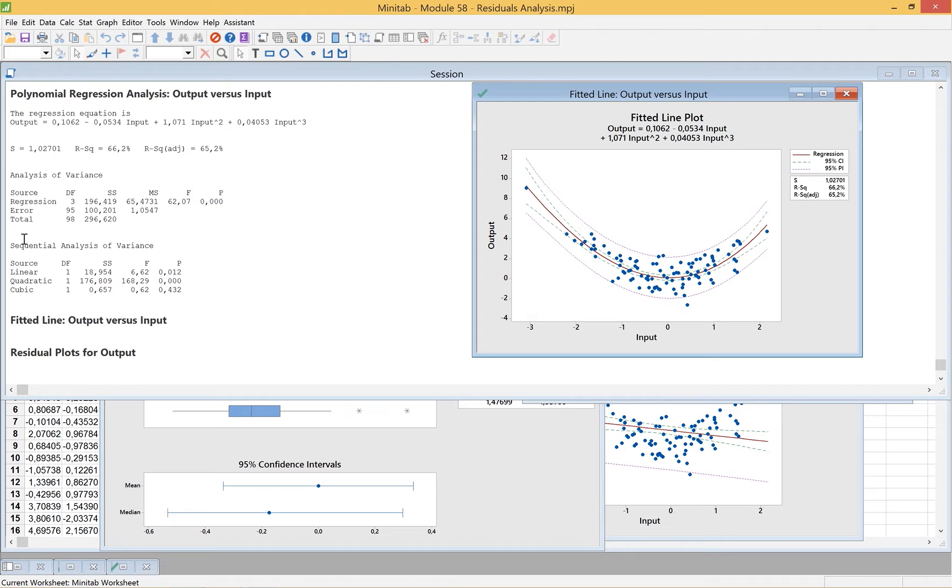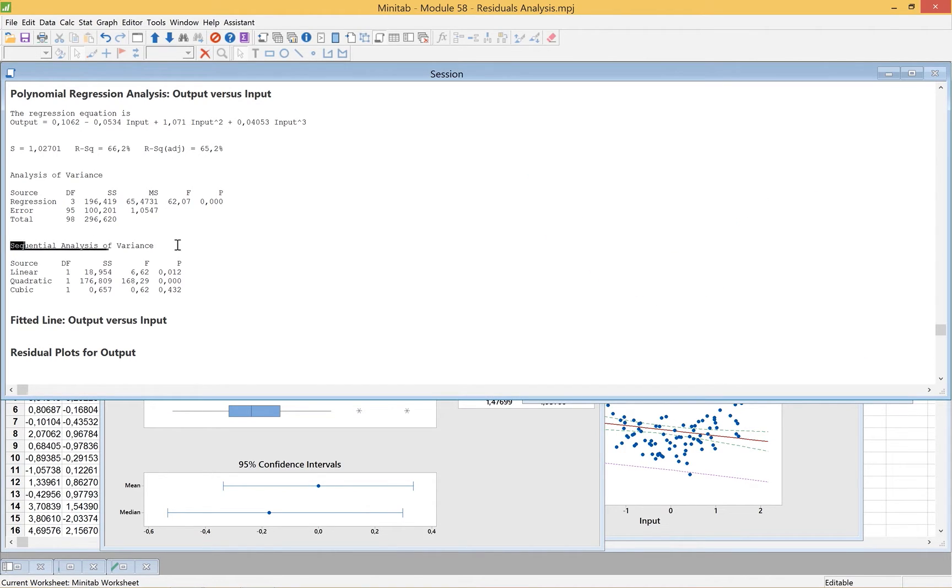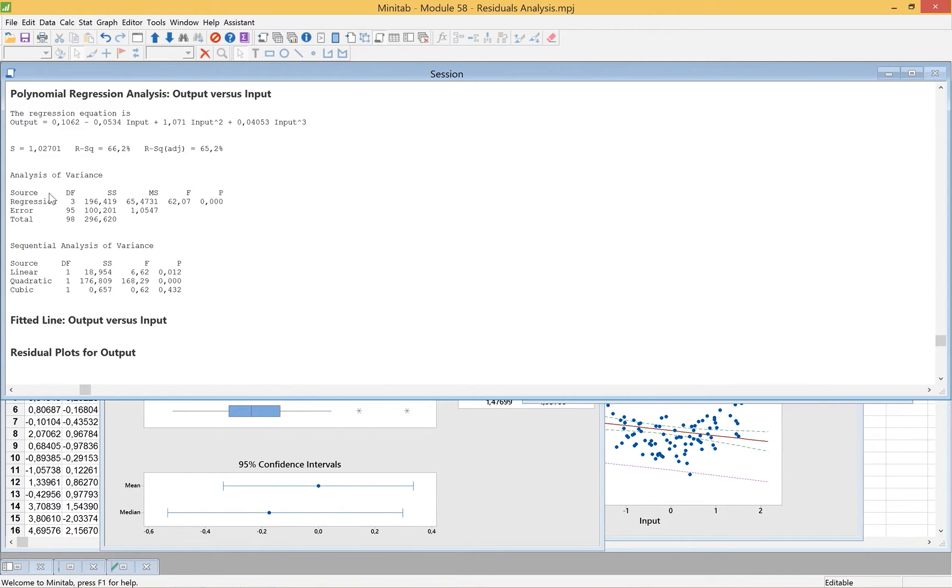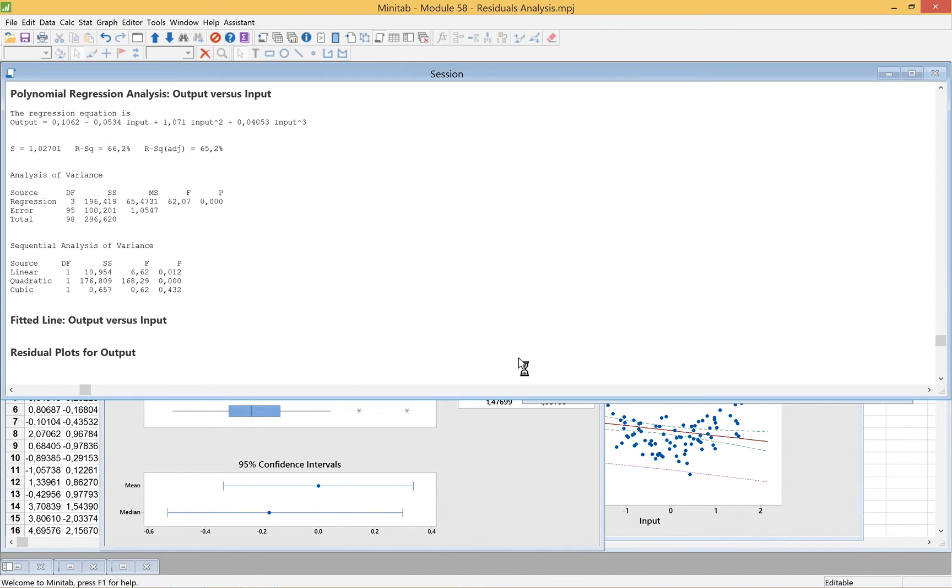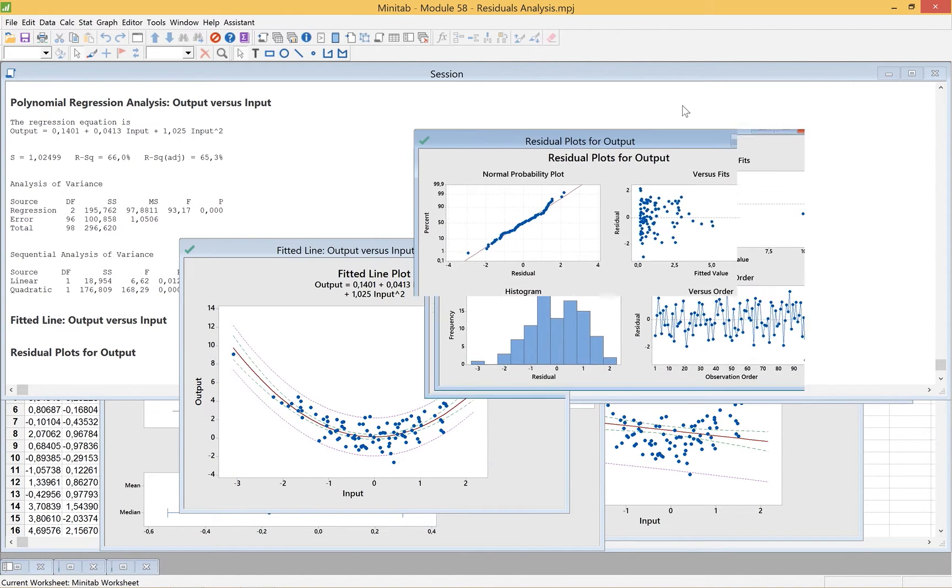Again, we come back here. We take a look at this sequential analysis of the variance. We see the linear was statistically significant at 0.02, but the quadratic is 0.000, and the cubic actually is 0.432. So it says that cubic, even though it looks good, it's not explaining that much new variation beyond what was in the quadratic. Let's edit the last dialog box. Now we understand this should be the quadratic. This function is actually the best fit to the data.